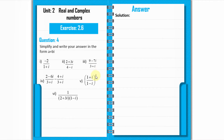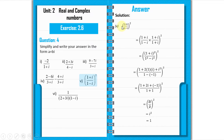Now we solve part 5: [(1 plus iota) divided by (1 minus iota)] whole squared. The denominator is (1 minus iota), so we multiply and divide by (1 plus iota). This gives (1 plus iota) squared over (1 squared minus iota squared), all squared.